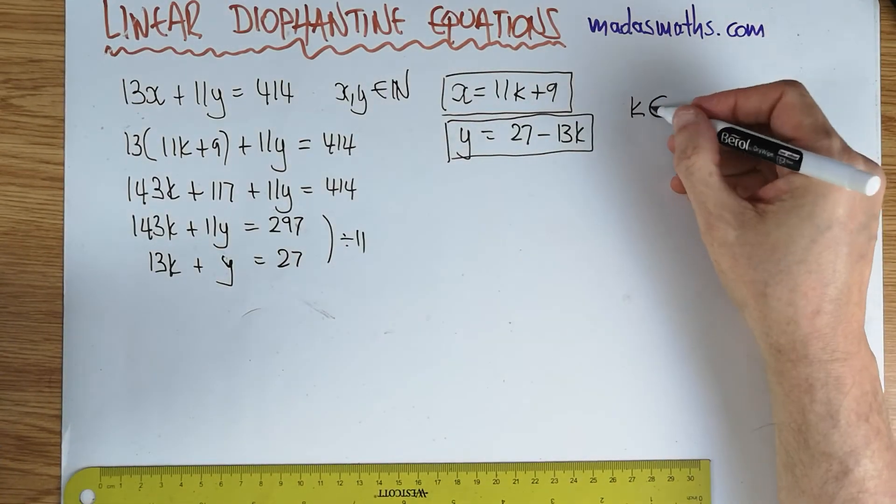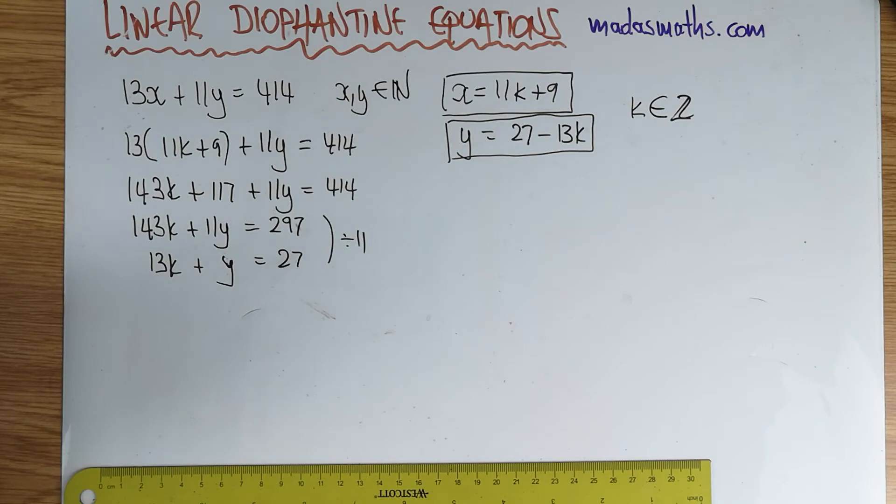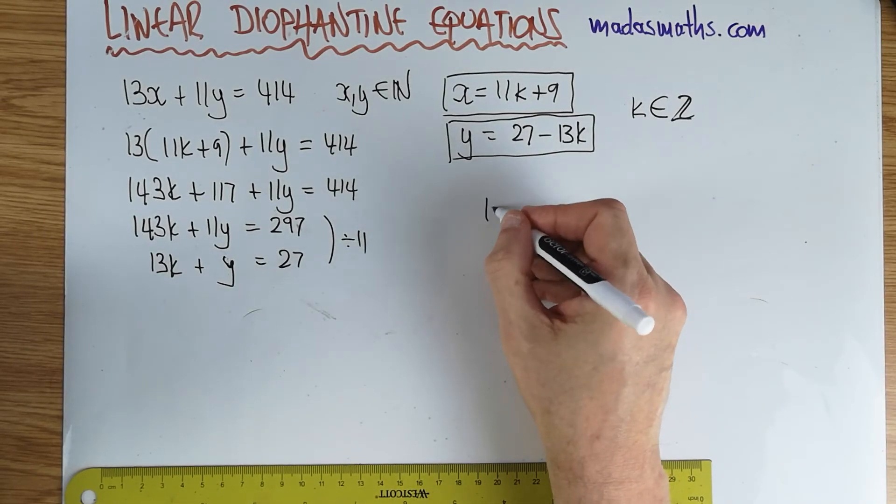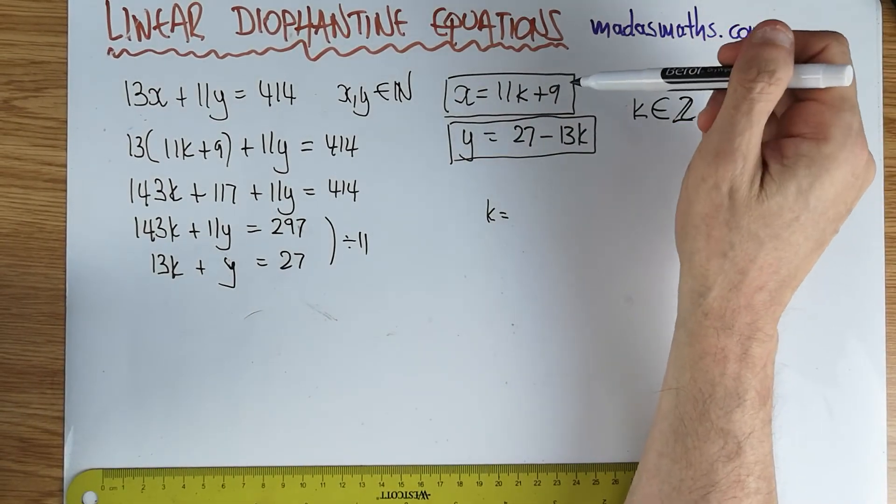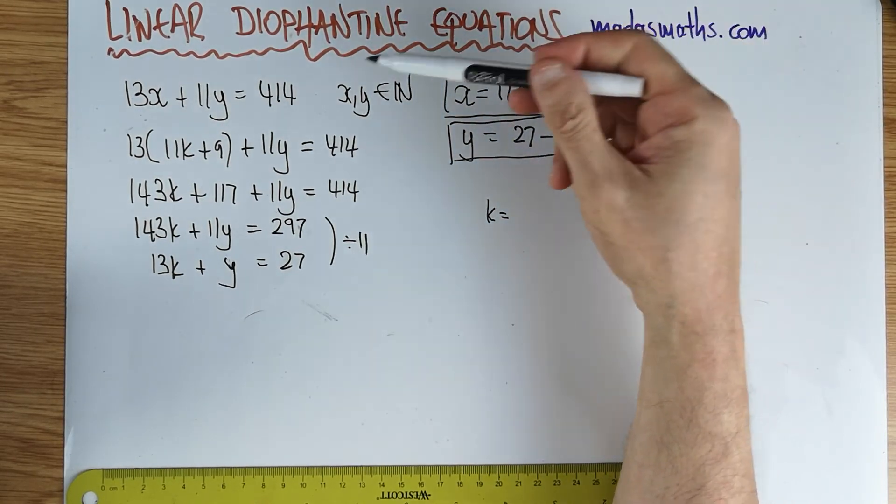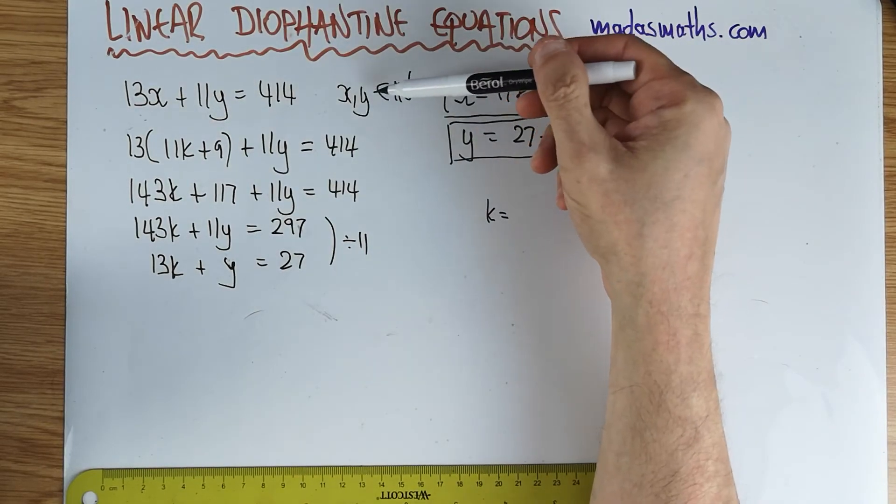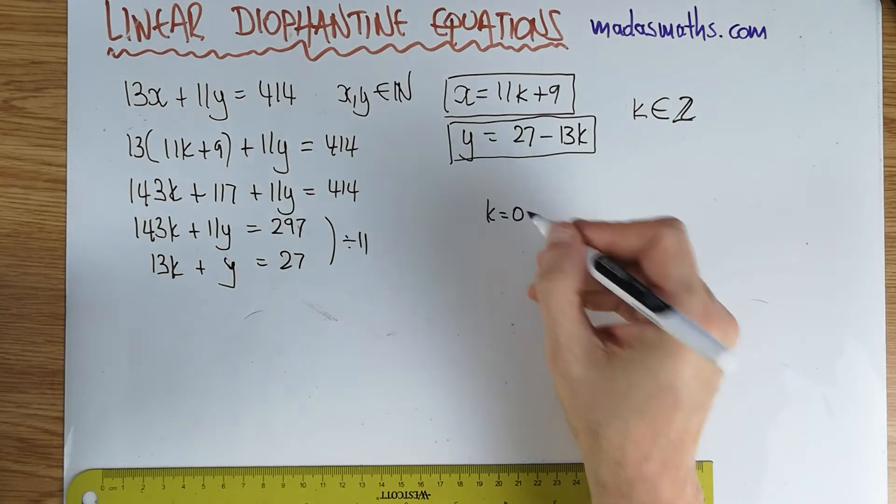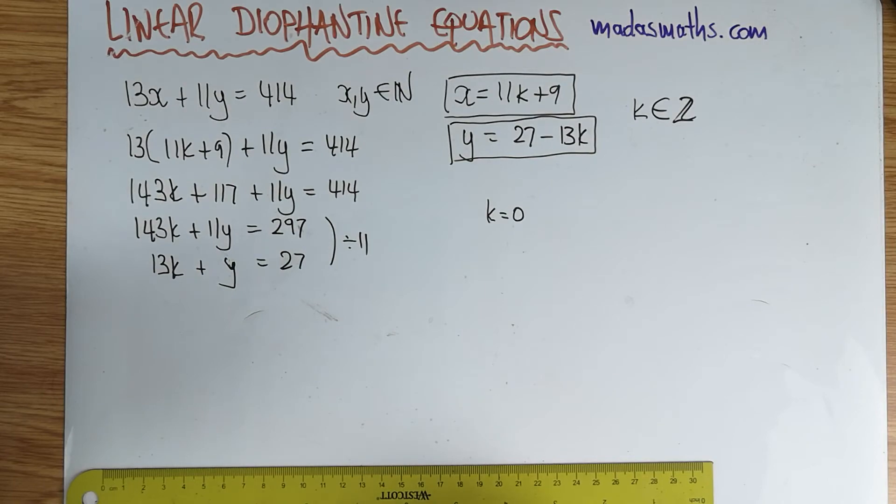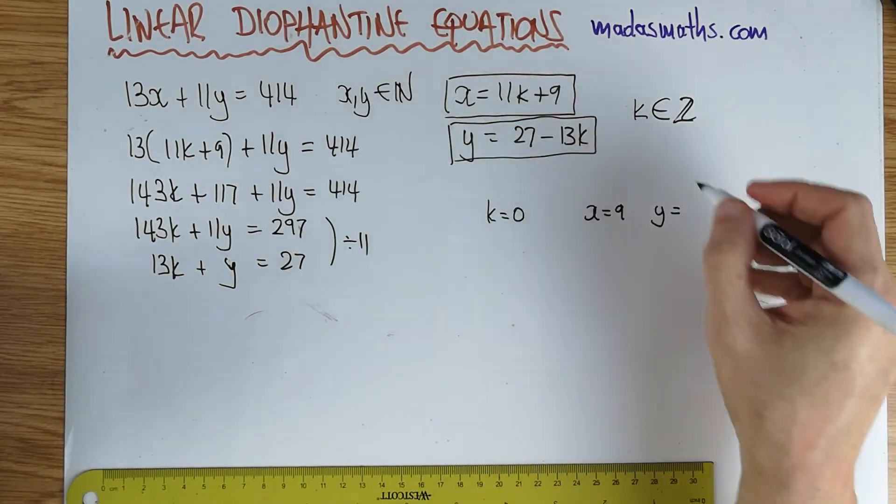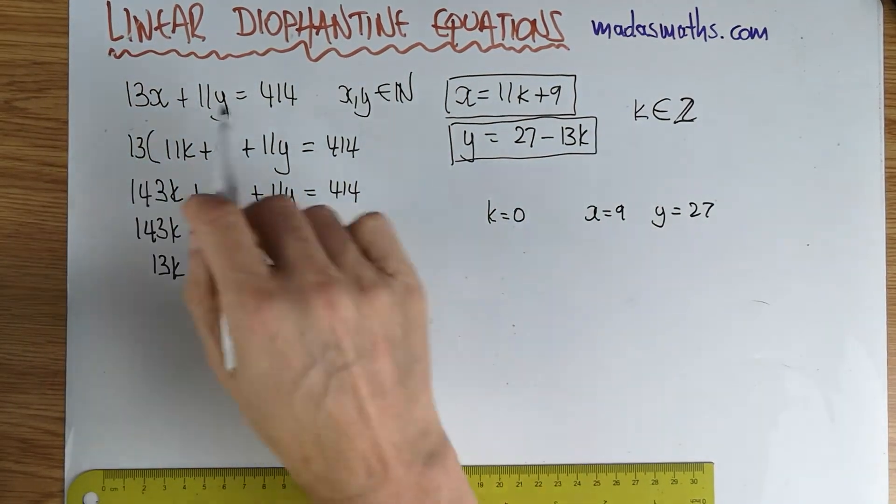So this is now a set of parametric equations in terms of the parameter k, where k of course is an integer, and we want all the solutions, all the solution pairs x, y which balance that. So first of all, k cannot be a negative number, and the reason for that is if we put a negative number for k, this parametric equation is going to produce a negative x, and we said x must be a positive integer. Therefore, k equals 0 will produce x equals 9 and y equals 27.